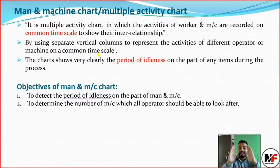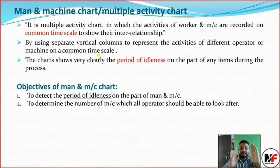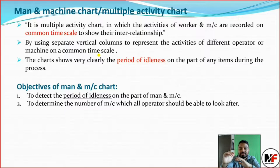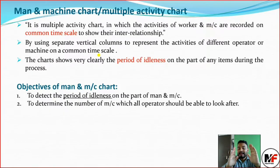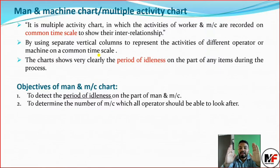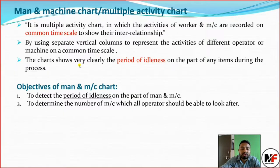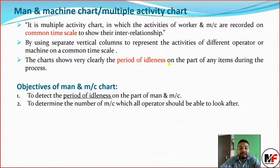On the common time scale, the worker is allocated work and the machine is allocated work. How much time is the worker idle? Idle means that no work is being done. The chart shows very clearly the period of idleness — the period where the worker or machine is not doing any work.